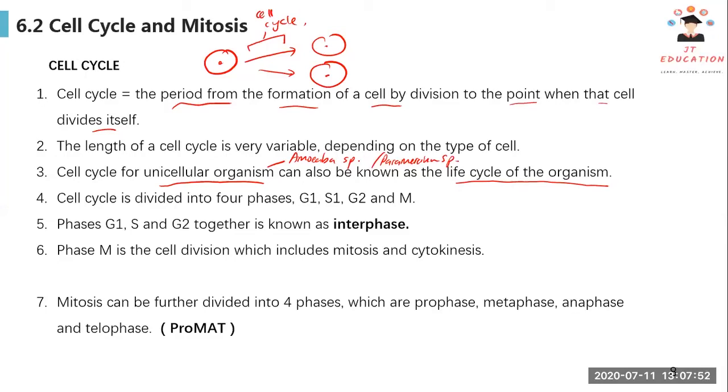For human cell or animal cell, the cell cycle is divided into four phases. The first one will be the G1 phase, S phase, G2 phase, and the M phase. G1 phase also known as growth phase 1. S phase stands for synthetic phase 1. G2 is growth phase 2. M phase stands for mitotic phase or mitosis.